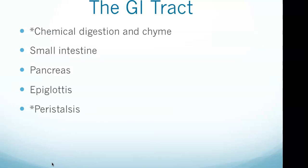The salivary glands release digestive enzymes and begin the process of chemical digestion. Chewed food is called the bolus and passes through the esophagus and into the stomach. The contents of the stomach are called chyme, and chyme exits the stomach and enters the small intestine. Digestion is completed in the small intestine, which is also the main site for absorption of nutrients. The pancreas digests lipids and fats in the small intestine. The epiglottis is a flap of cartilage that covers the trachea and routes food to the esophagus while swallowing.